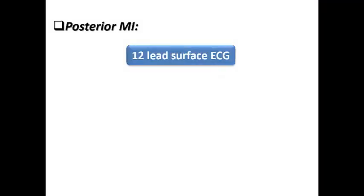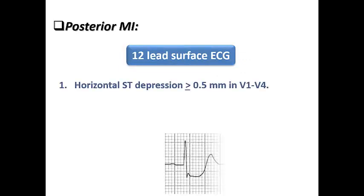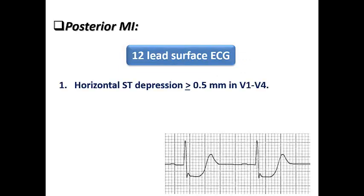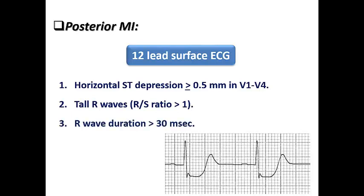Posterior MI can be diagnosed through the 12-lead surface ECG as it can show horizontal ST depression of more than or equal to 0.5 mm in V1 to V4 — only 0.5 mm is enough. Tall R-wave means that the RS ratio in these leads is more than 1, and R-wave duration more than 30 ms. The R-wave here is equivalent to the pathological Q-waves of posterior STEMI, along with upright T-waves.